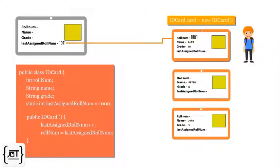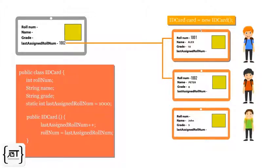So the first student gets role number 1001. For the next student, again the last value is picked, incremented, and assigned. Thus, each student gets assigned a role number that is next in line.